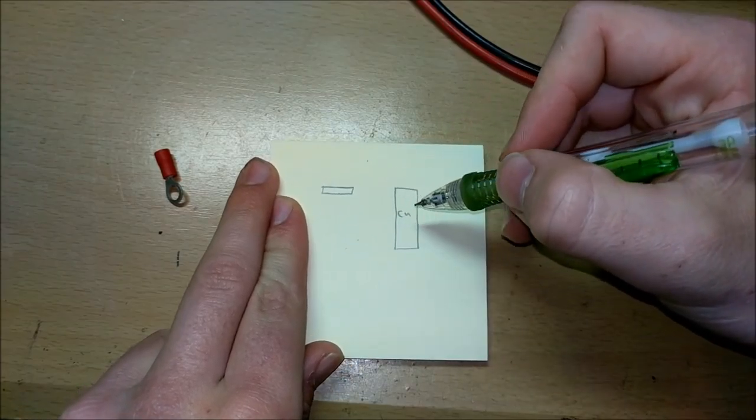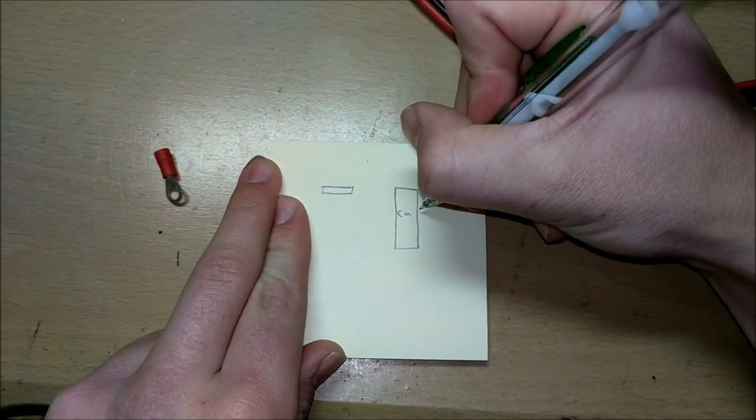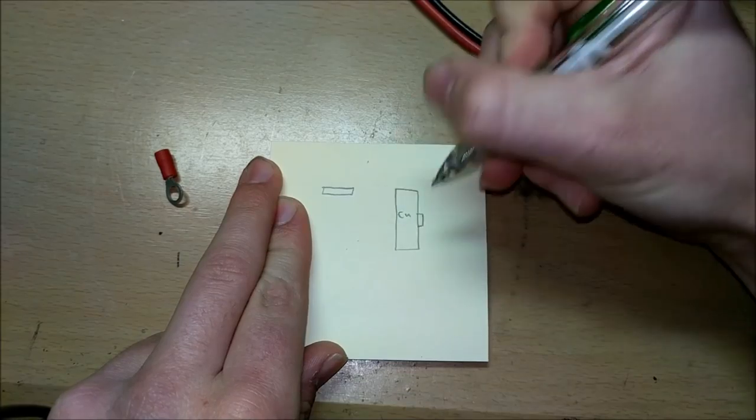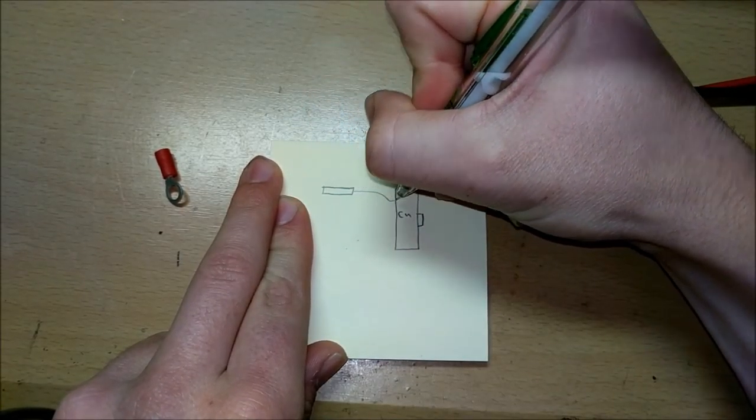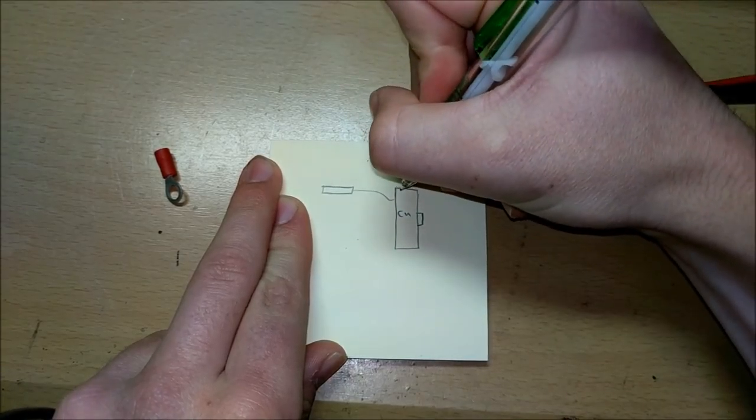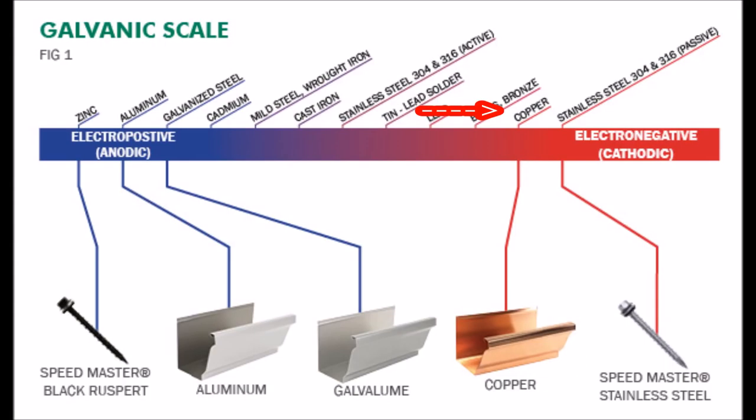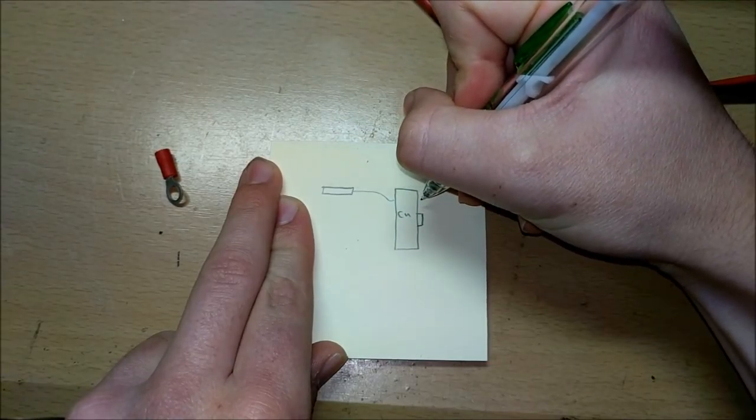So what you're going to do is, you're going to want to put something called a sacrificial anode on this copper. And so you'd electrically connect it to the copper, either by direct connection or by a wire. And what would happen is, copper is more electronegative. That means it takes in electrons.